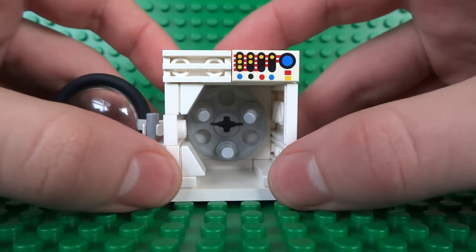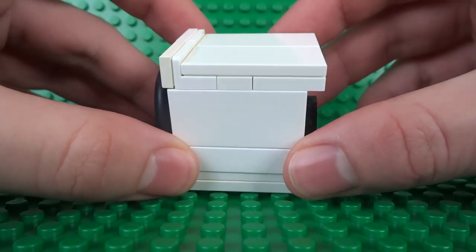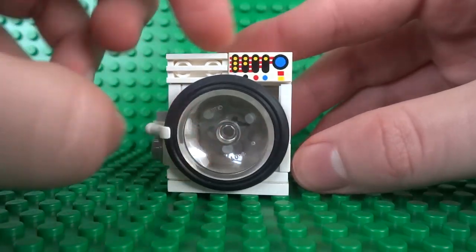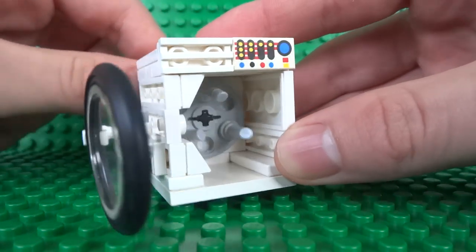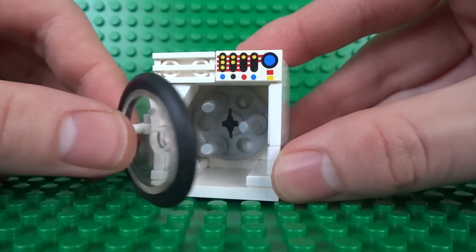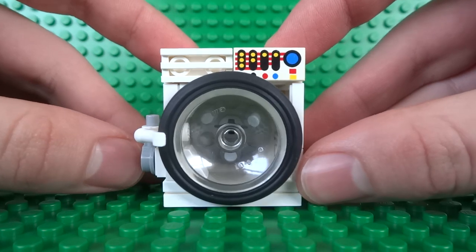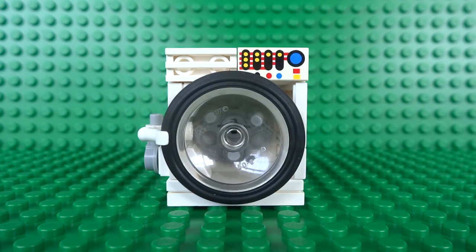So as you can see this minifigure scale washing machine is a great size to fit inside your minifigure scale houses and buildings as it's a very compact design and it includes all of the details and decorations of a real washing machine as well as another great touch which is the door on the front which actually curves inwards just like on a real one. So let's take a look at how to build it.